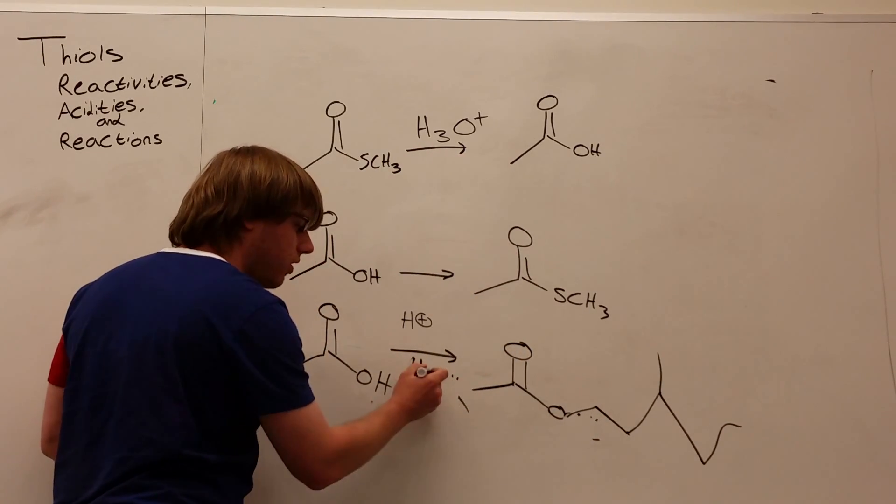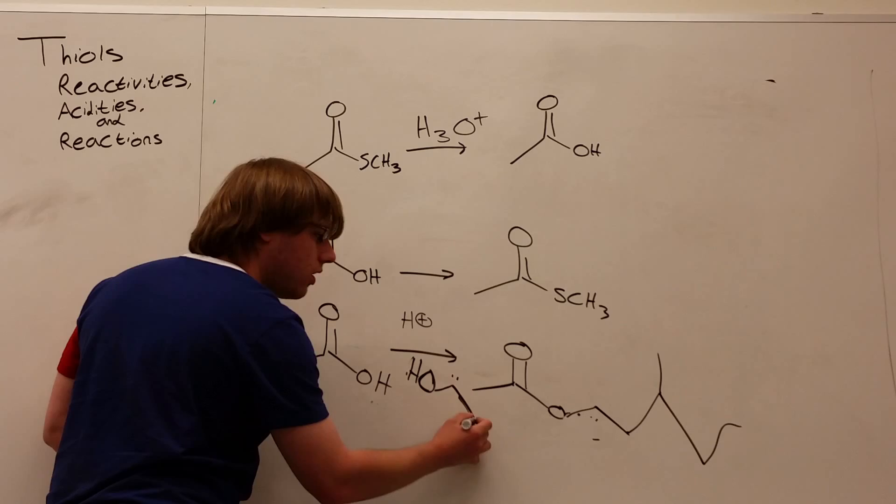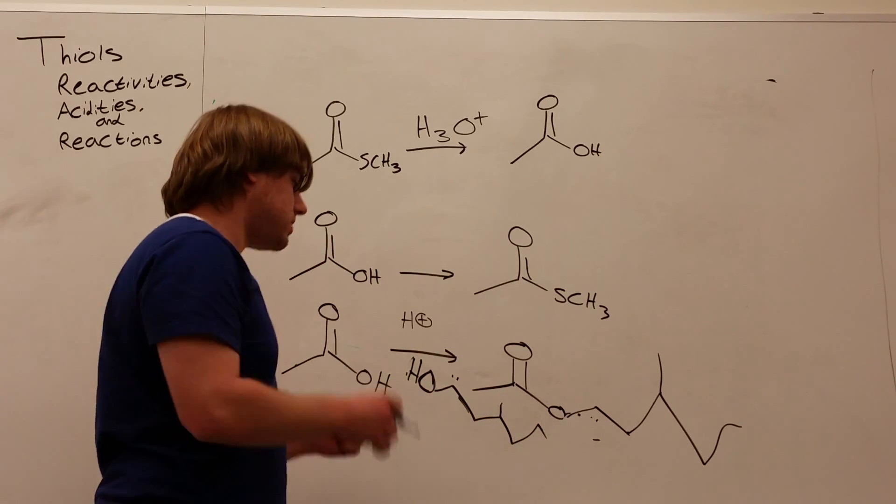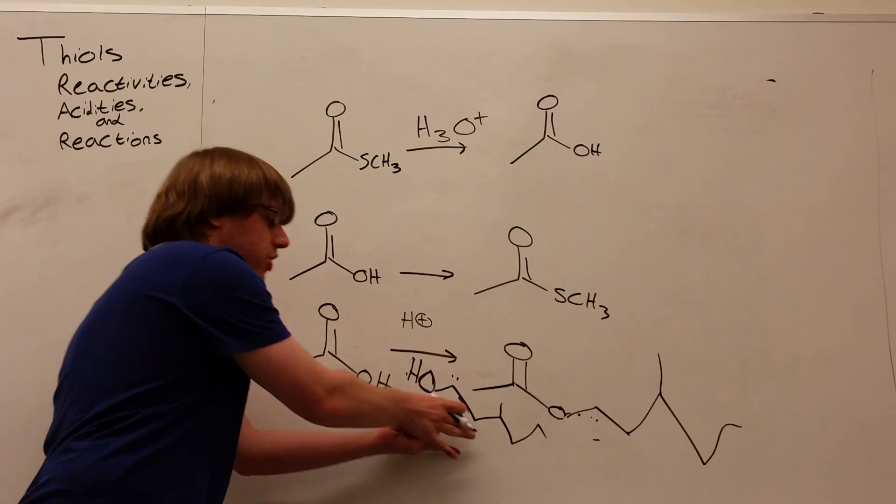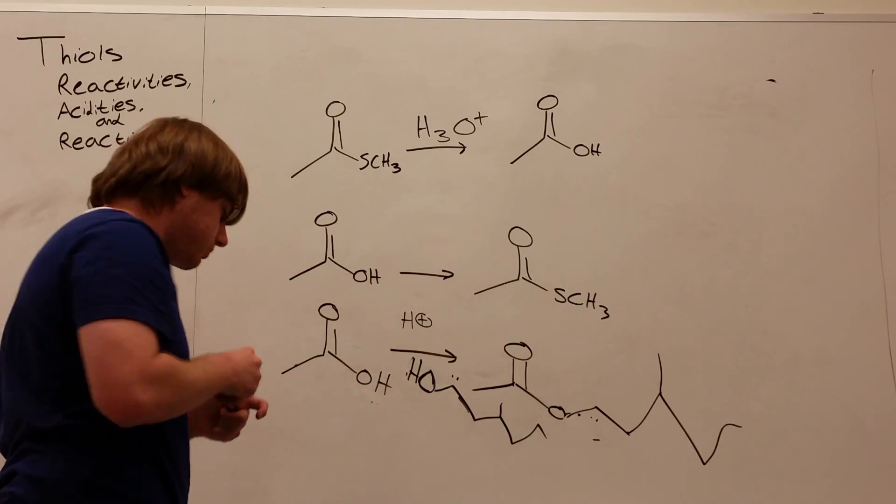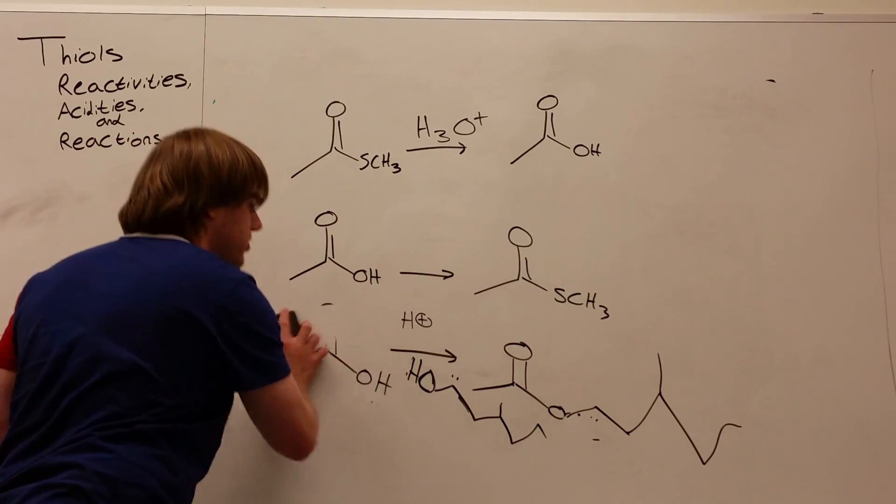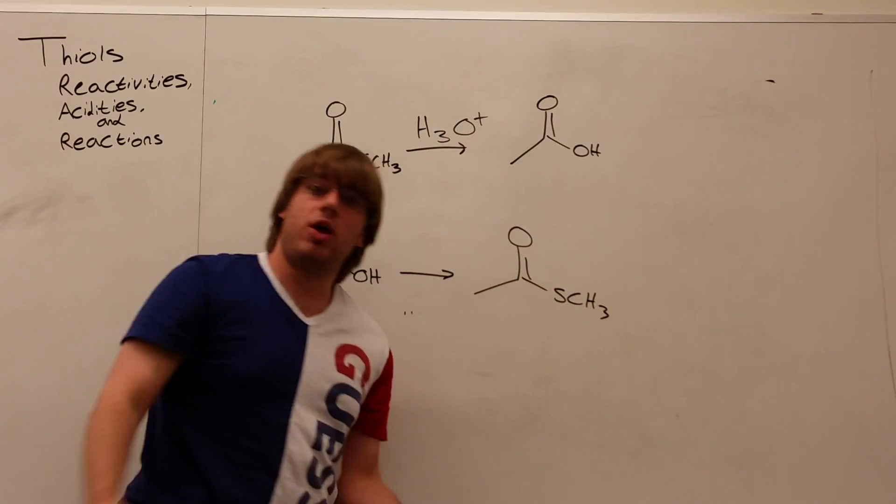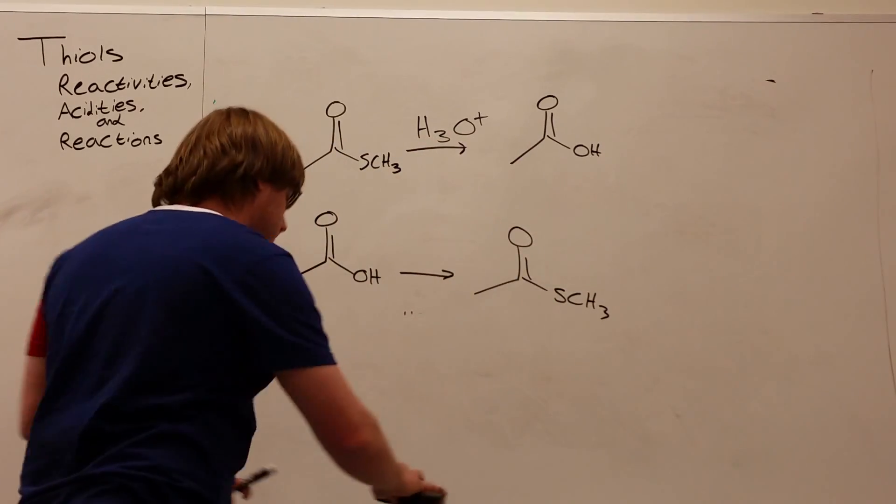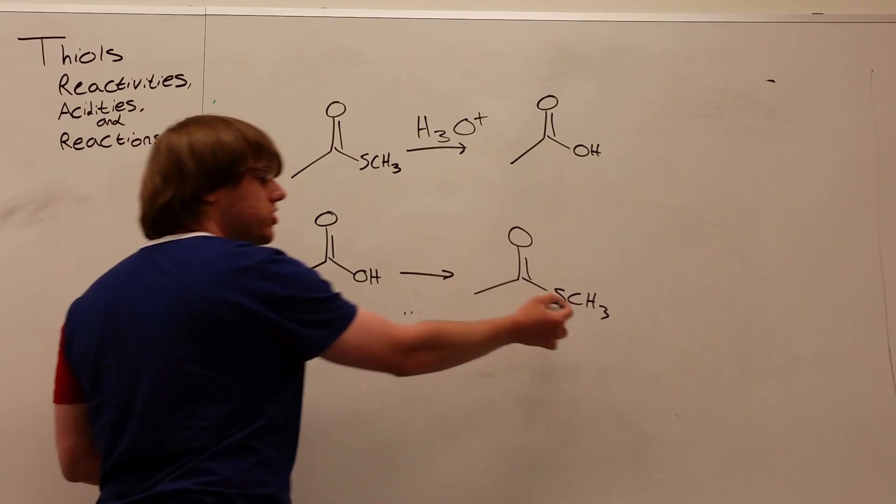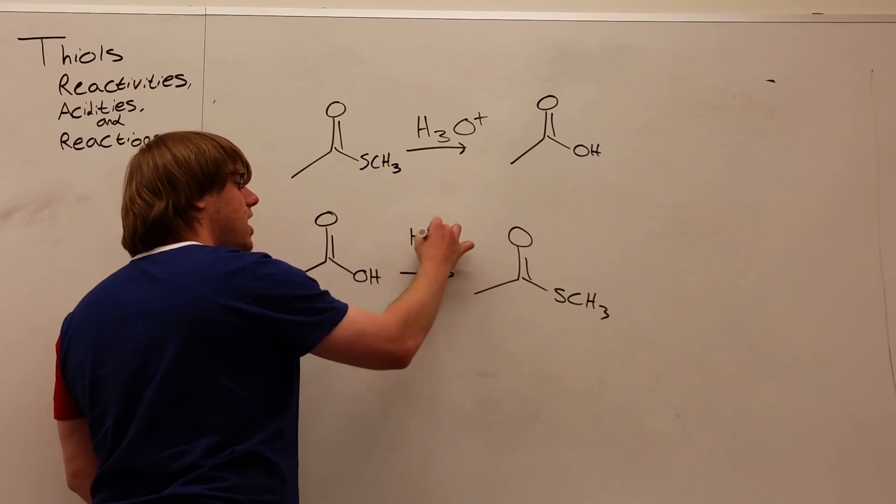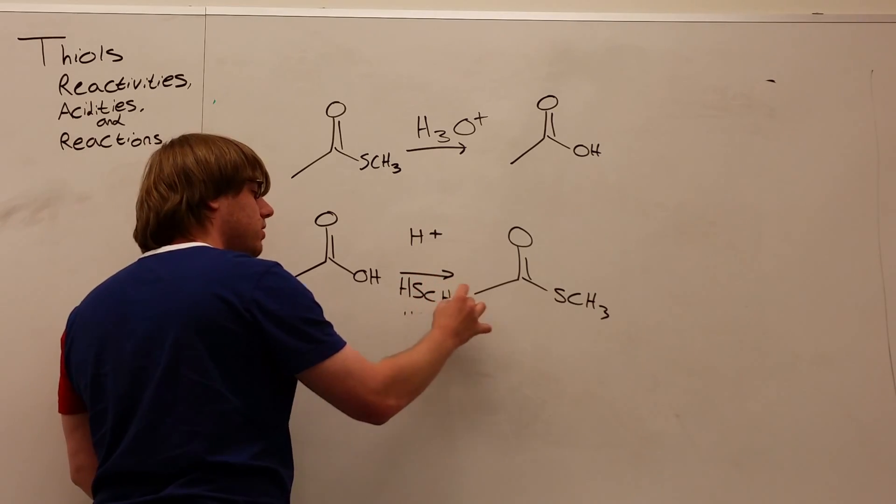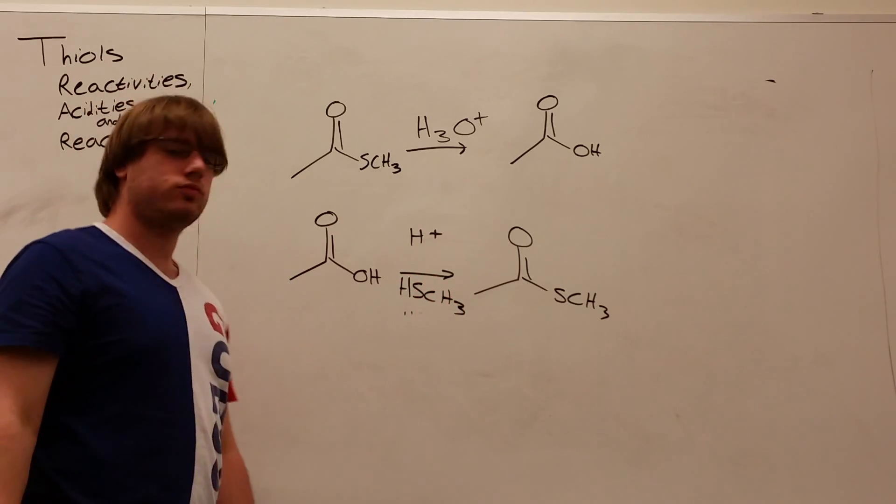It doesn't matter. The point is, all you're doing is you're replacing the OH with the OR that's over the arrow. So if that's how we do it for esters, how do you think we're doing it for thioesters? Basically the same way, but instead of oxygen, we're going to use sulfur. So if I want to turn this OH into SCH3, what I'm going to do is H plus over the arrow, and then HSCH3 under it.